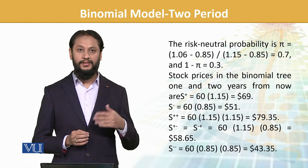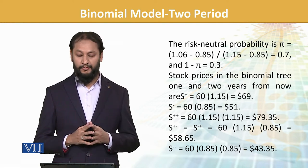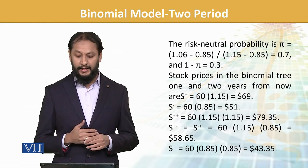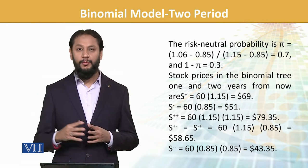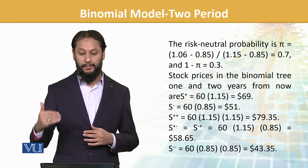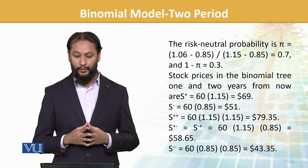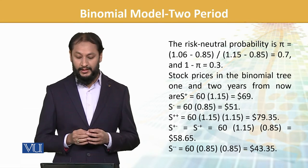π = (1.06, which is going up, minus the path that is 0.85 going down) times 1.15 divided by (1.15 minus 0.85), which is the difference. We get π = 0.7.